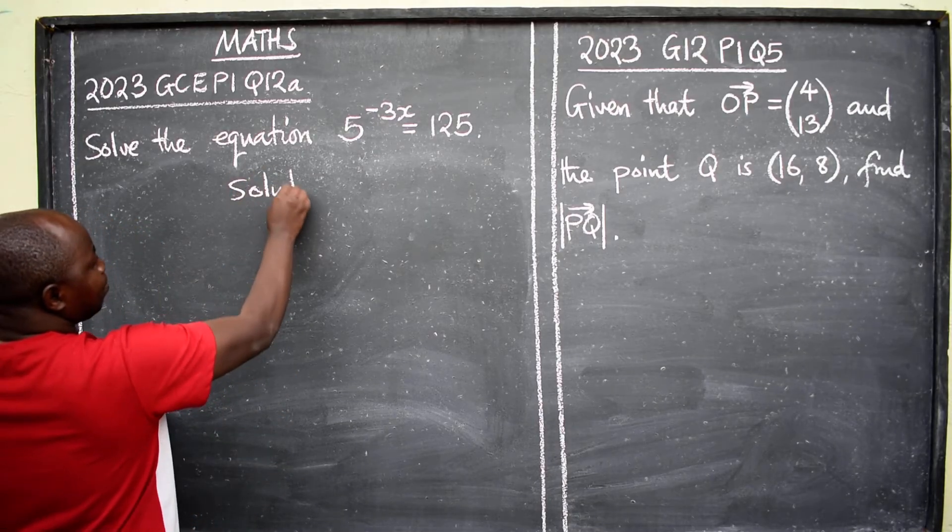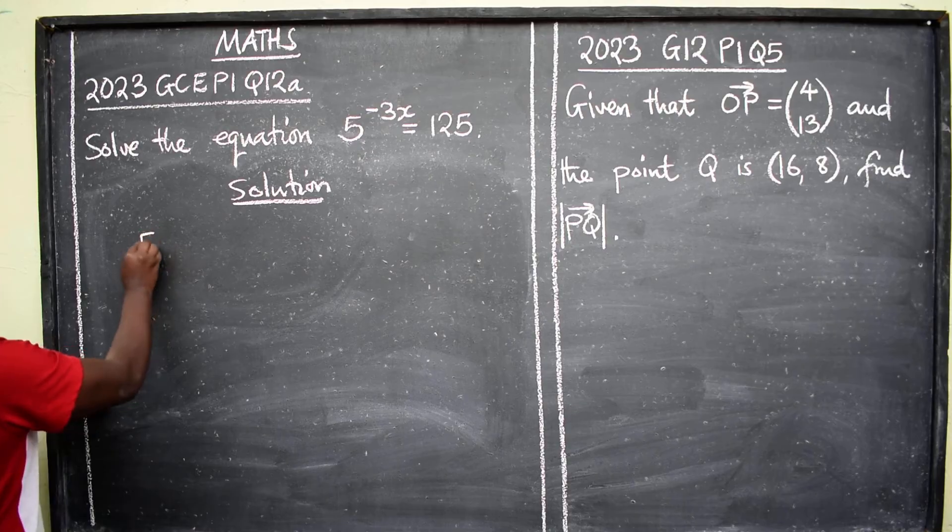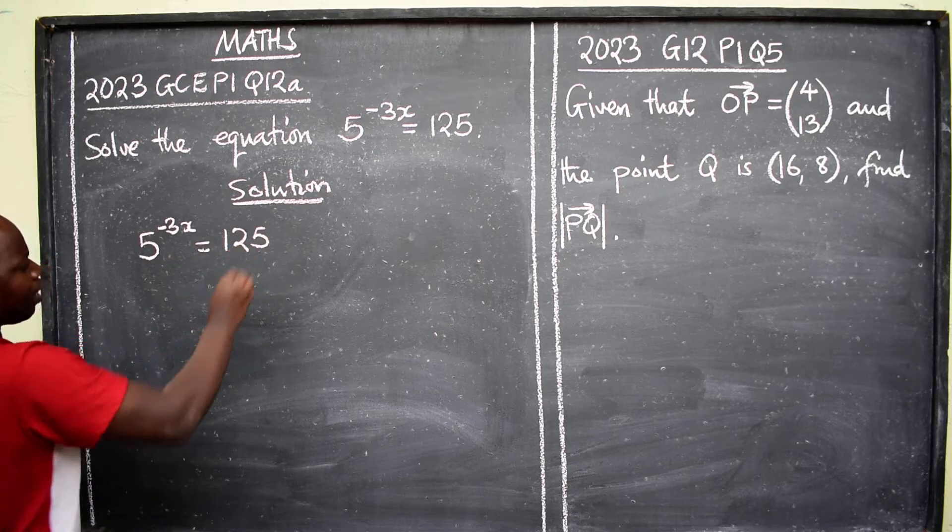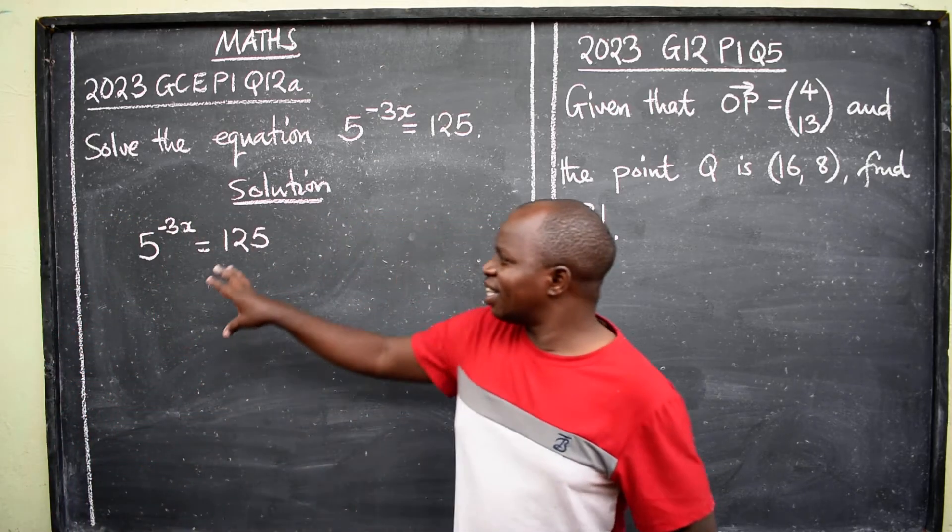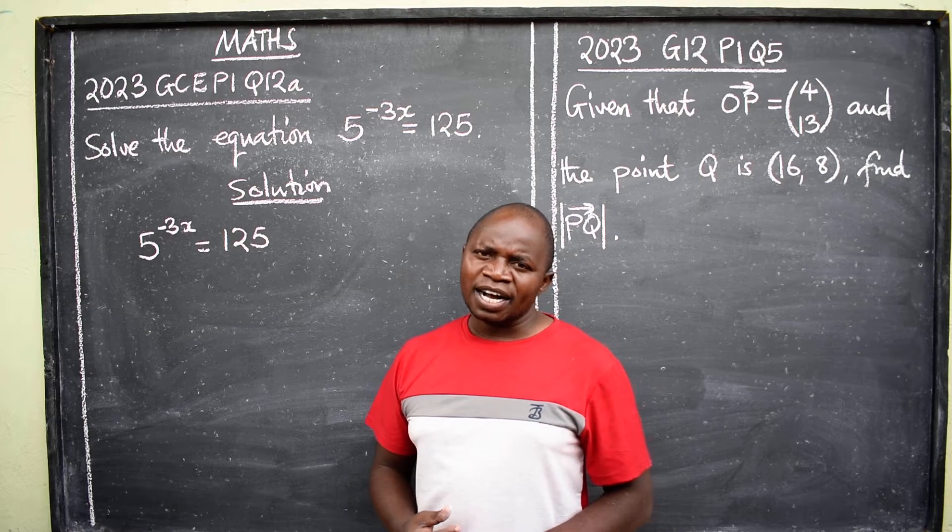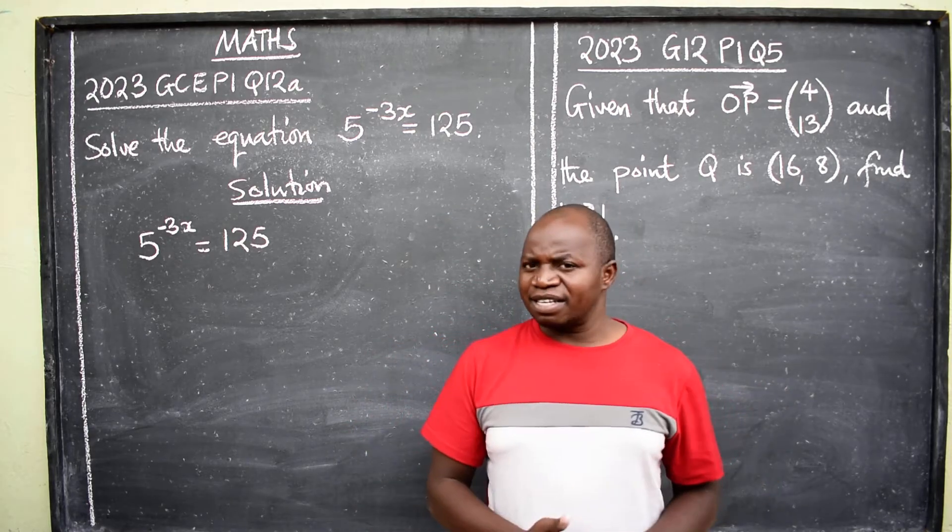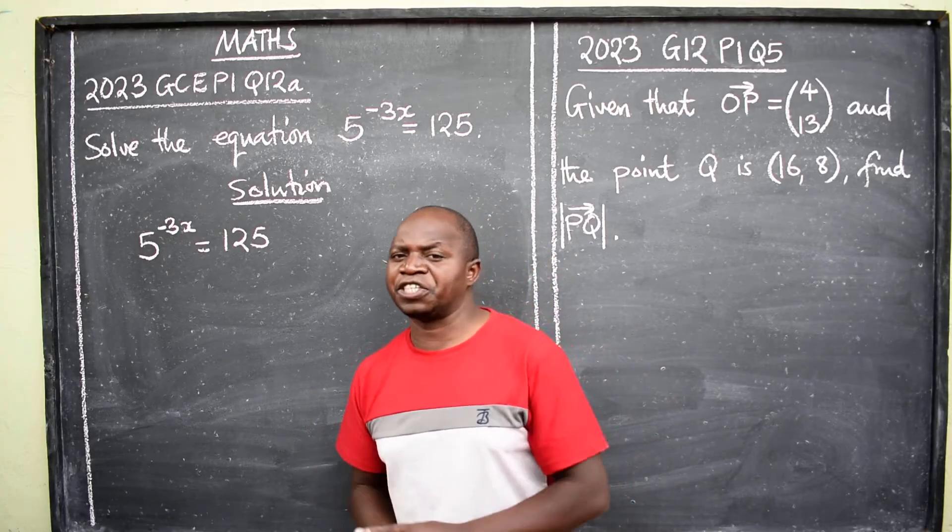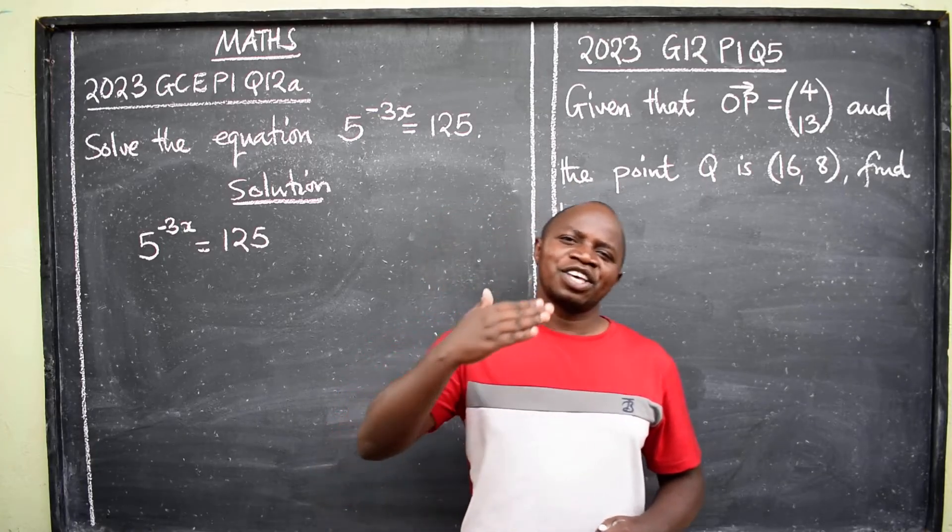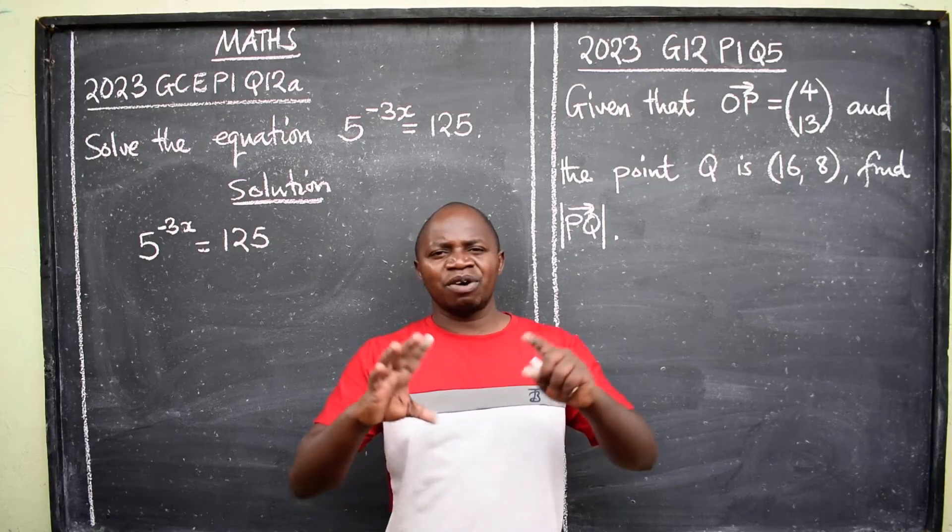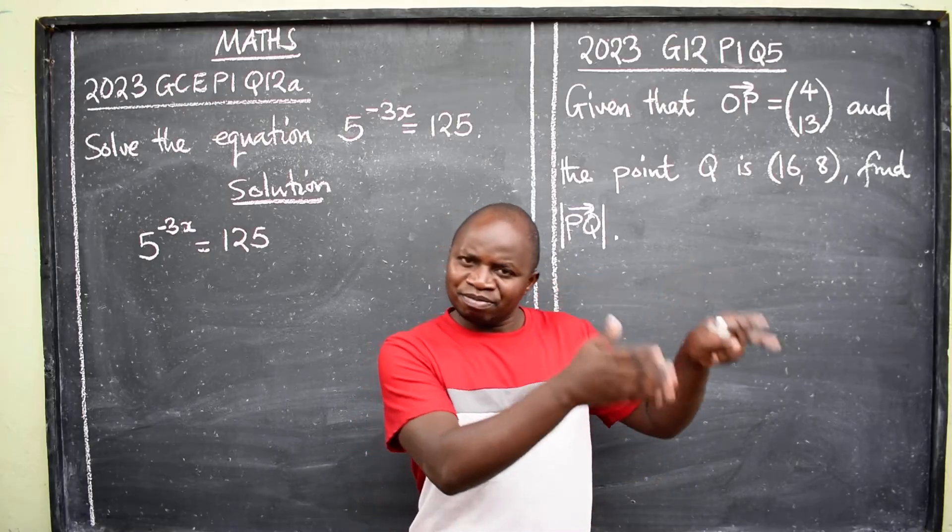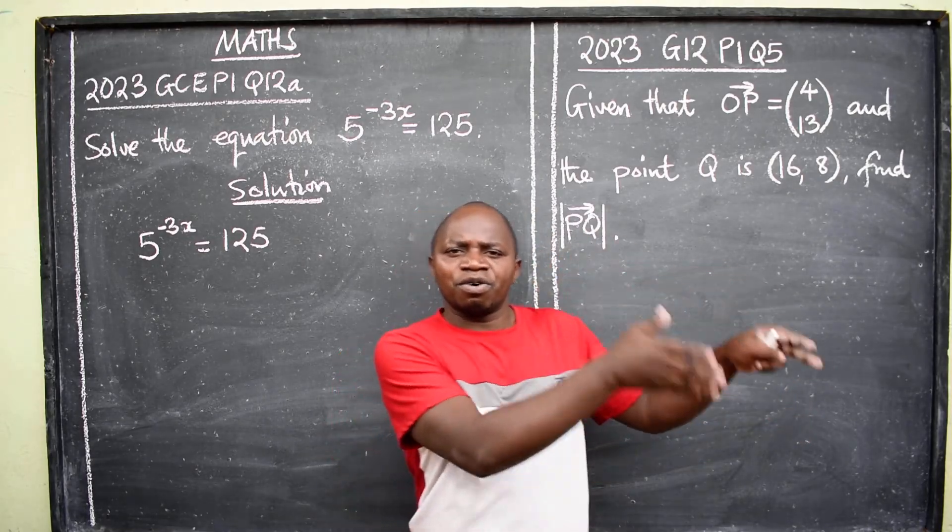So let's say solution. We have 5 raised to the power negative 3x is equal to 125. Ladies and gentlemen, this is coming from exponential equations under the topic called indices or index notation. I'm encouraging you students to make sure you understand all the types and how they look.